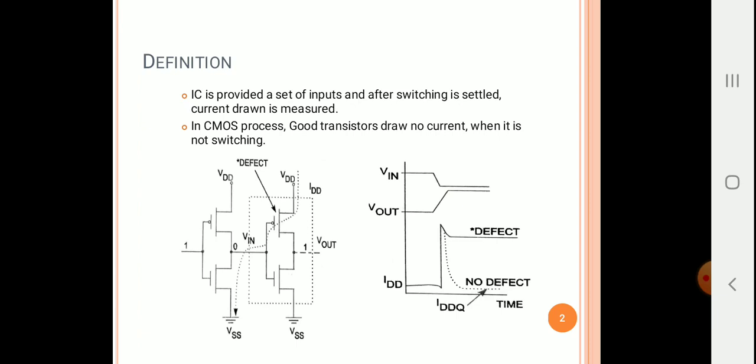After the input settles down, the circuit will eventually settle to a final stable output state. After reaching the stable state condition, the current drawn by each and every transistor is measured. As we have discussed before, a good transistor will not draw any current from the supply voltage.